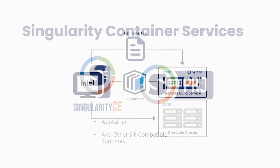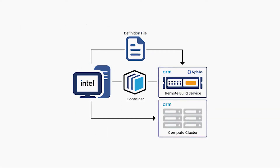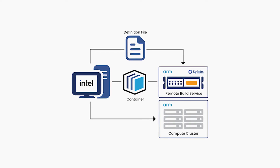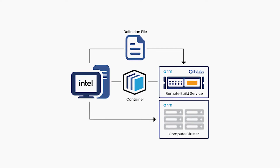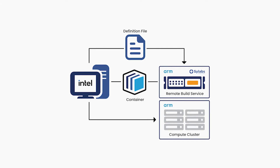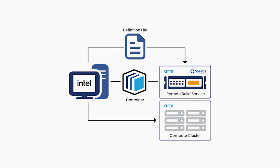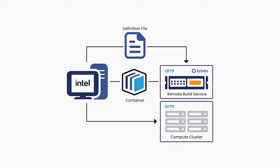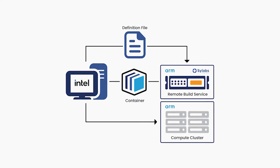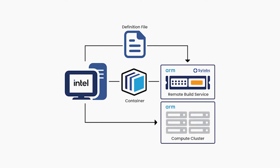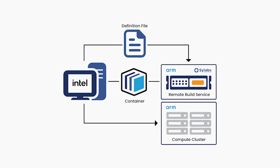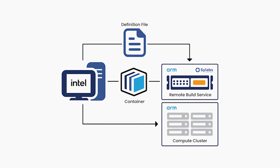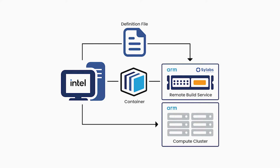A Singularity Enterprise HPC workflow may begin with deployment on an x86 laptop, then be deployed on ARM or power platforms. This is made possible by the remote build service that can run natively on those architectures without the limitations of emulation technologies. You can also use Singularity Container Services' remote build service from a smartphone or tablet. The container runtime does not need to be installed in order to build a container from a definition file in the Singularity Container Services' web interface.